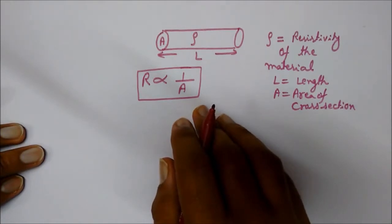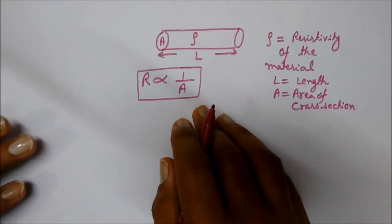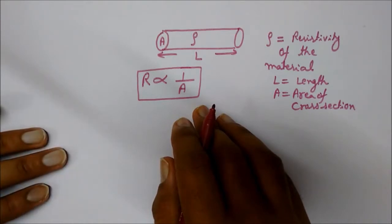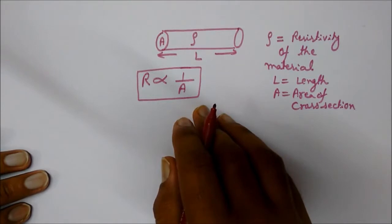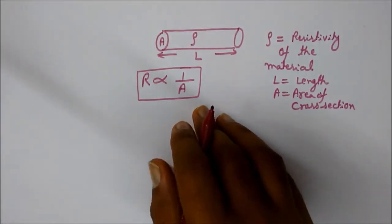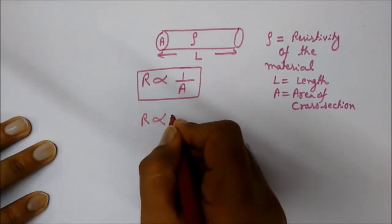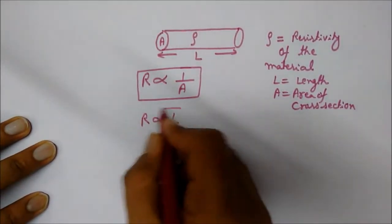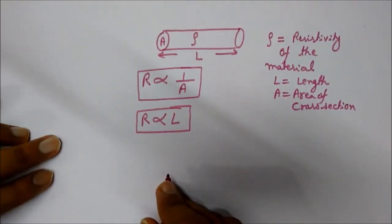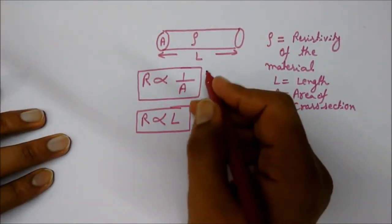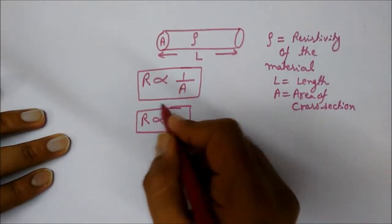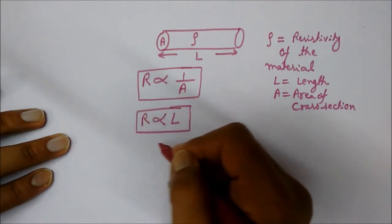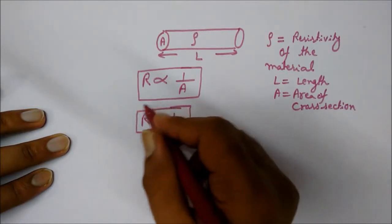As the length of the wire increases, the electrons have to encounter more resistance due to lots of collisions with the ions of the material. So we can understand that R is directly proportional to the length L of that conductor. As the length increases, the number of collisions increase.